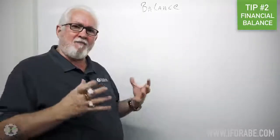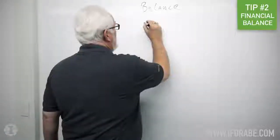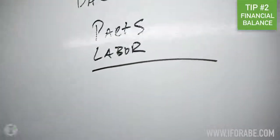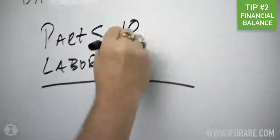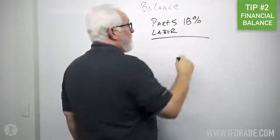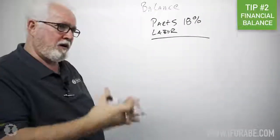So I have a business and I sell parts and labor. We call these variable costs. These are what we call above the line. So I want my parts to be 18% of my sales and I do that by using a parts matrix which we will talk about later in another tip.